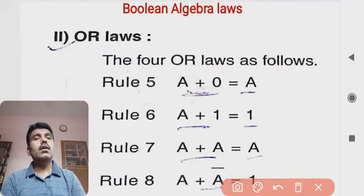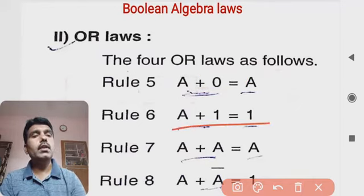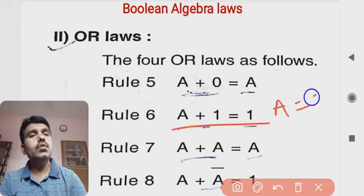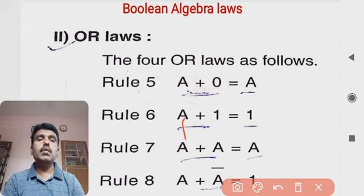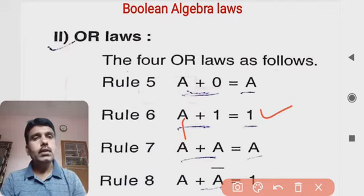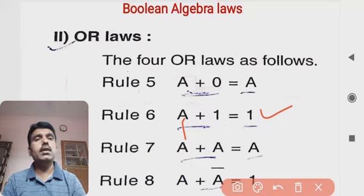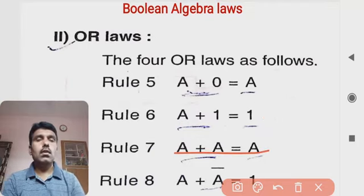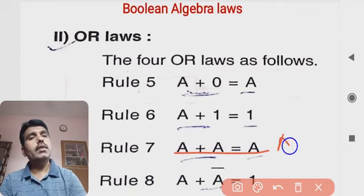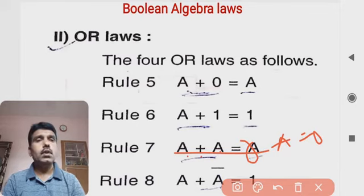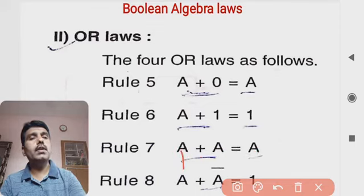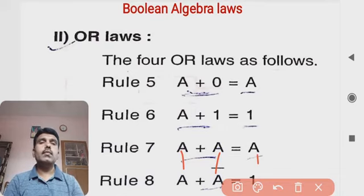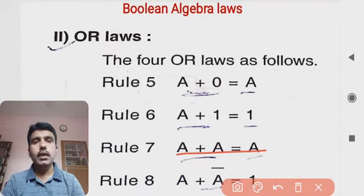The sixth law is: A OR one is always one. If A is zero, zero plus one is one. If A is one, one plus one is one. So regardless of the value of A, the output is always one. The seventh law is: A OR A is always A. If A is zero, zero plus zero is zero. If A is one, one plus one is one. The output equals A.